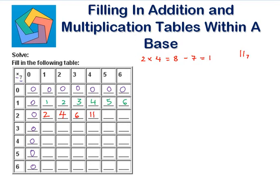2 times 5 is 10. 10 minus 7 is 3, so this is 13 to the base 7. 2 times 6 is 12. 12 minus 7 is 5, so this is 15 to the base 7.